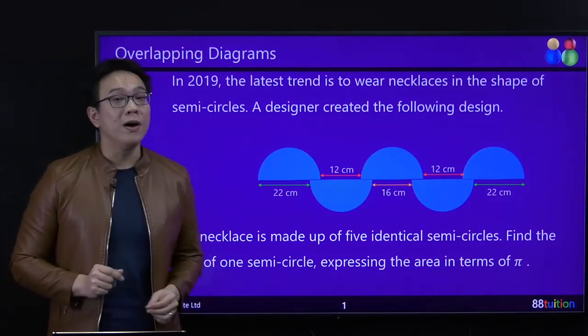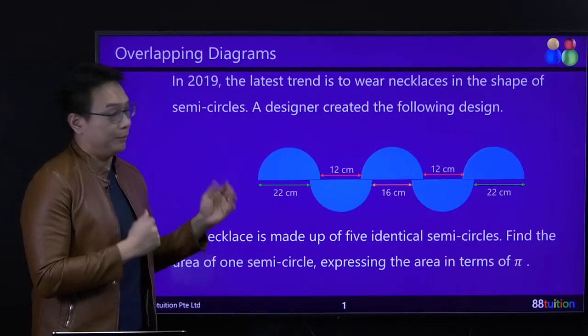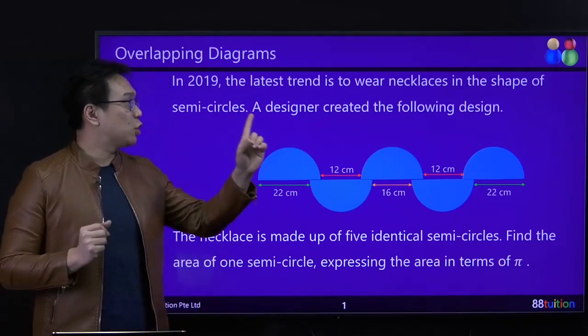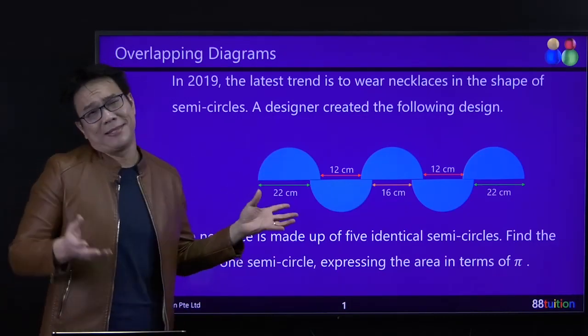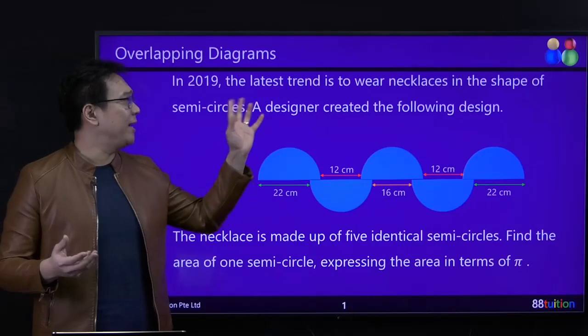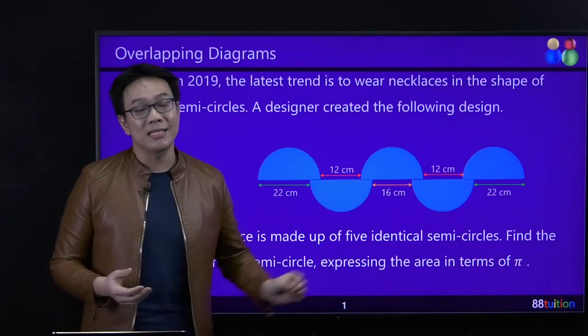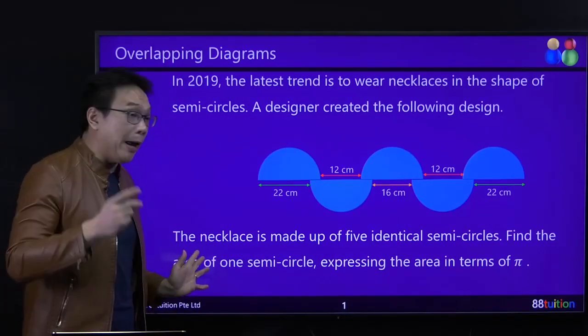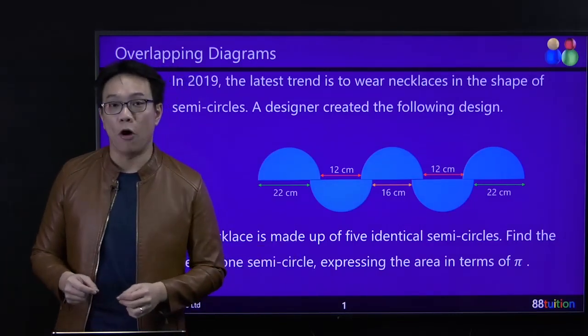I call this overlapping diagrams. To make it more exciting, got storyline. In 2019, the latest trend is to wear necklaces in the shape of semicircles. Who does that? I also don't know. Never mind. A designer created the following design. The necklace is made out of five identical semicircles. What's the meaning of identical? Same-same. Find the area of one semicircle, expressing the area in terms of pi.